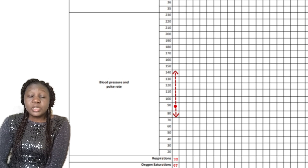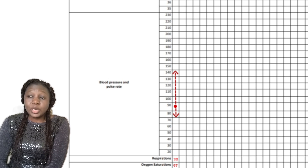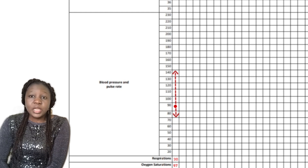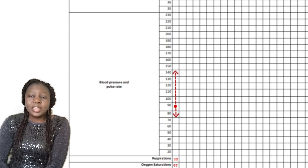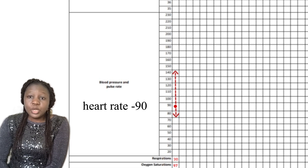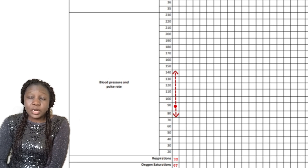For blood pressure and pulse rate, they are kind of interwoven. If the patient's blood pressure is 140 systolic and 80 diastolic, you put an arrow inside the box in front of 140, then draw a line down to the box in front of 80 and put another arrow. Ensure you put the value beside the arrows — write 80 beside the diastolic arrow and 140 beside the systolic arrow.